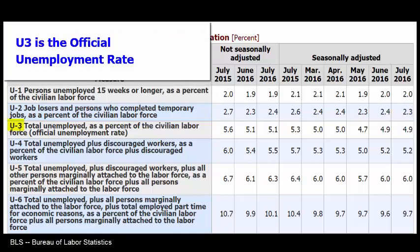This is the official unemployment rate. From July 2015 at 5.6% to July 2016, where it stands at 4.9%, the official unemployment rate has gone down.